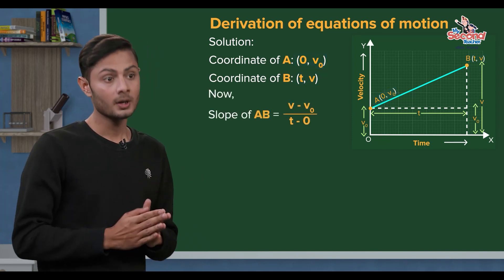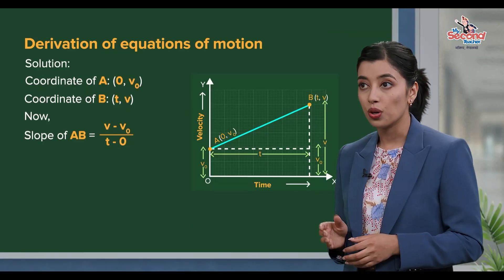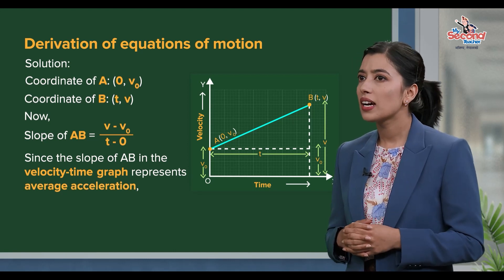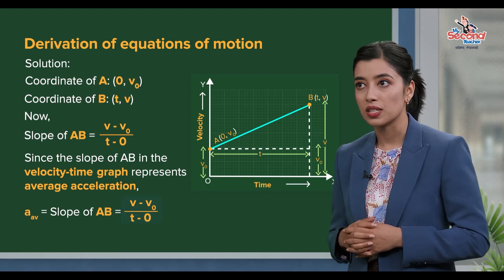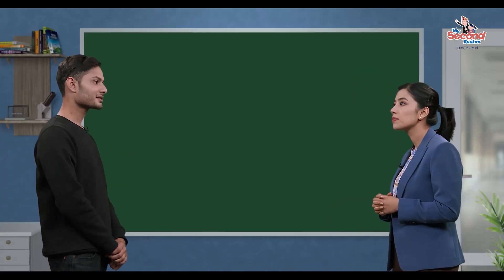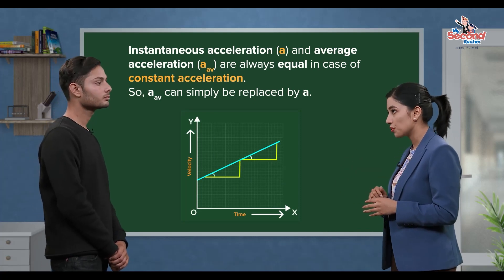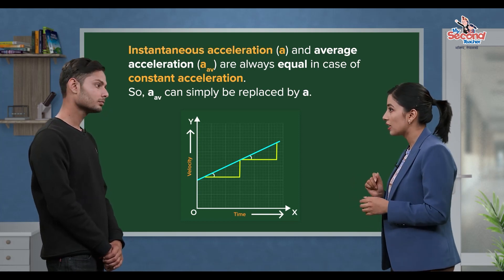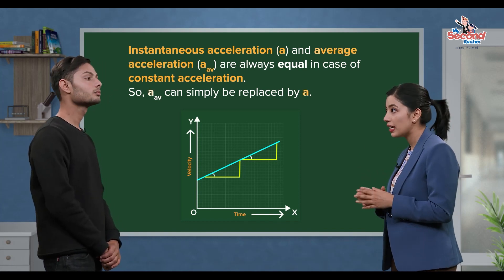A coordinate is (0, V0), so the slope of AB is (V minus V0) divided by (T minus 0). This slope is the average acceleration A-average, which equals (V minus V0) divided by T. For constant acceleration, the instantaneous acceleration A and the average acceleration A-average are equal.